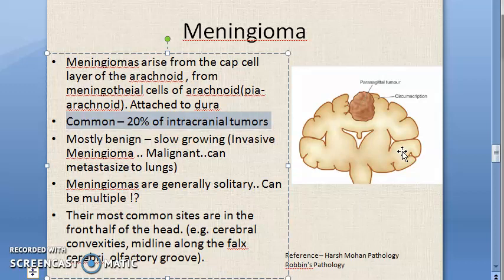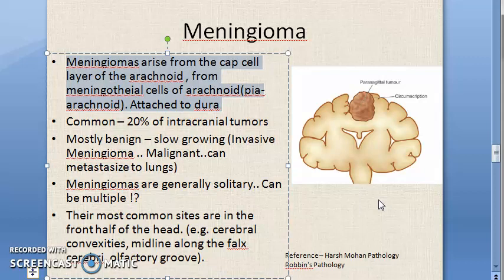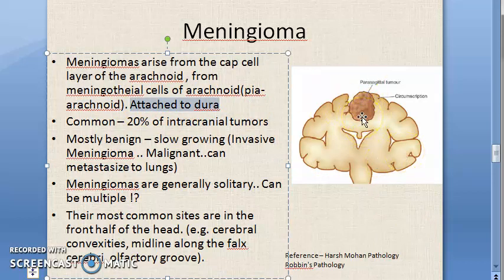It arises from the meningothelial cells of the arachnoid - just like you have epithelial cells, you have meningothelial cells of the arachnoid layer. Usually this tumor will be attached to the dura and it will be compressing the brain. It is mostly benign and slow growing, but it can be invasive, and invasive meningioma will be malignant.